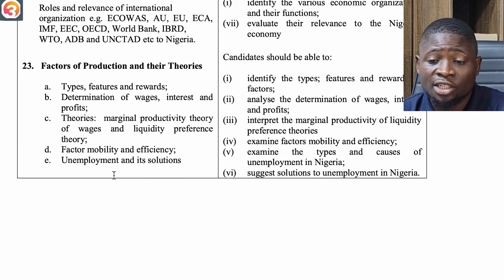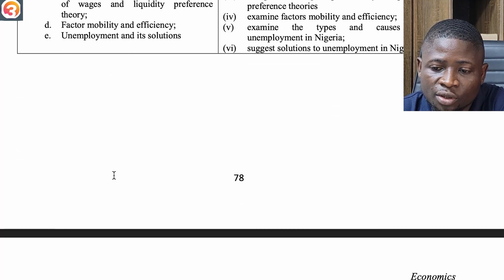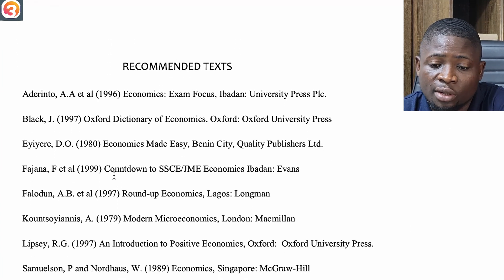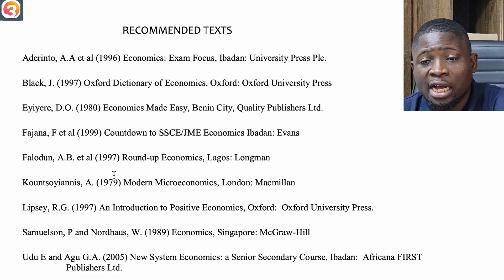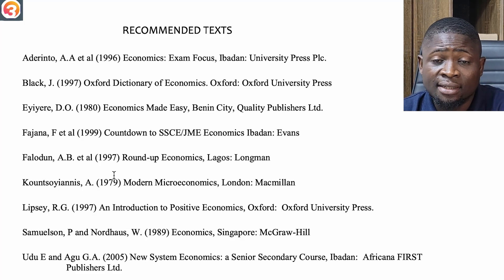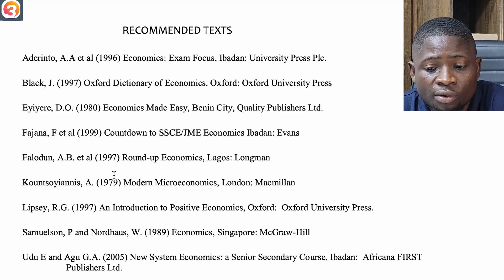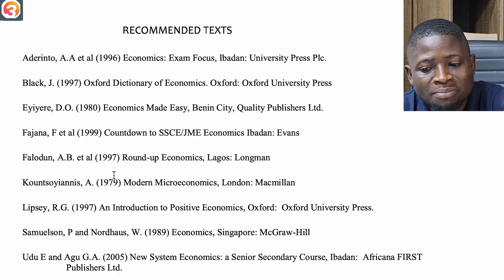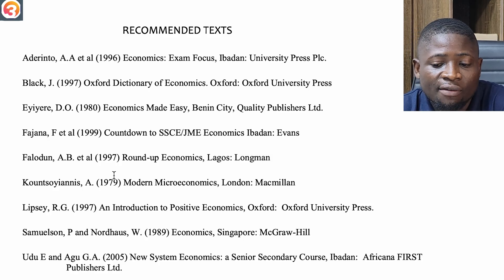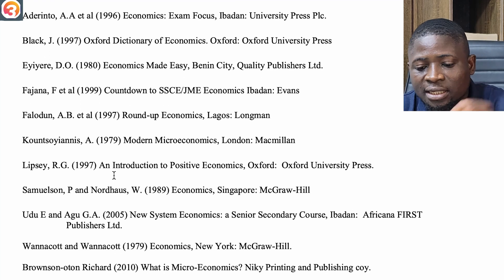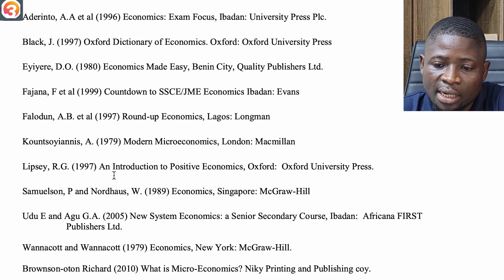Those are all 23 topics in economics you are supposed to pay attention to for your JAM examination. You have O3 Schools — you have the app and tutorials to help you achieve this. Any good textbook is very okay. Recommended texts include: Economics by Udu and Agu, Oxford Dictionary of Economics, Economics Made Easy by Yiri, Countdown to SSE/UTME Economics, Roundup Economics, and Modern Macroeconomics.